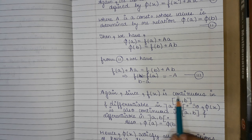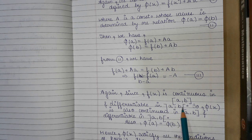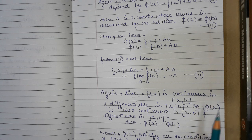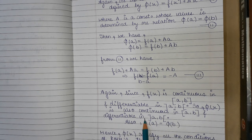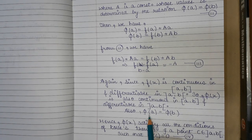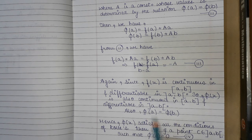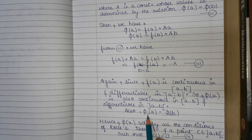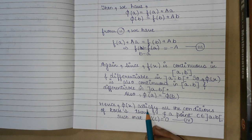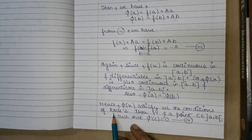Since f(x) is continuous on closed interval [a, b] and differentiable on open interval (a, b), the function φ(x), which is defined in terms of f(x), will also be continuous and differentiable. We have also assumed that φ(a) = φ(b). Therefore, φ(x) satisfies all the conditions of Rolle's Theorem.